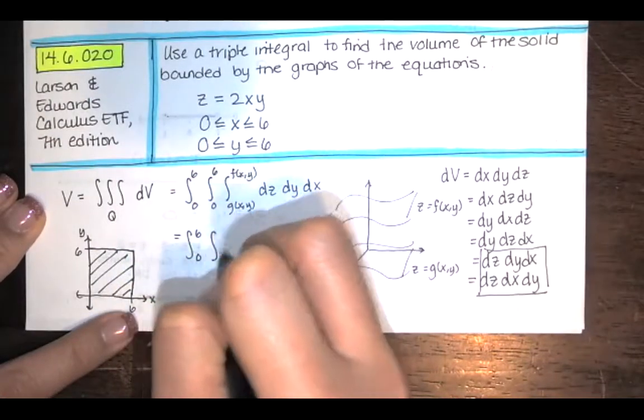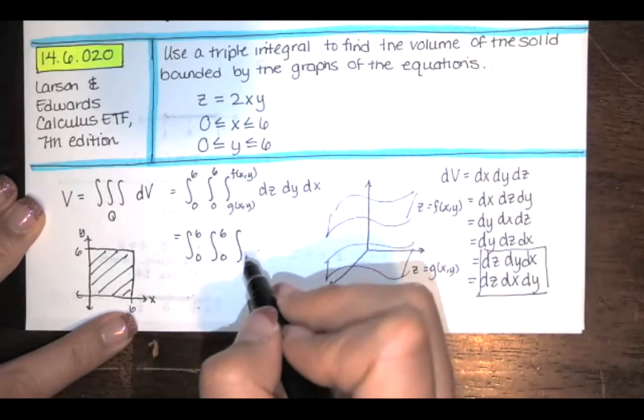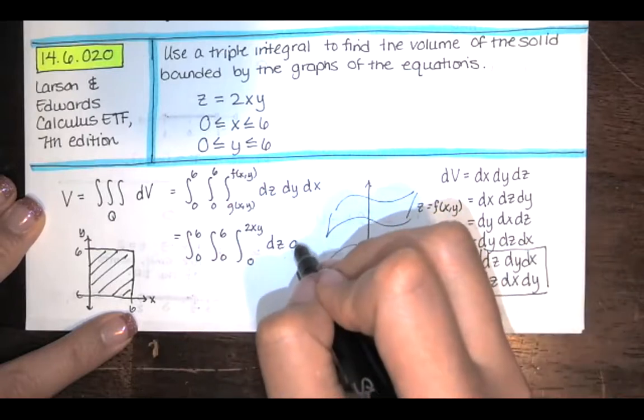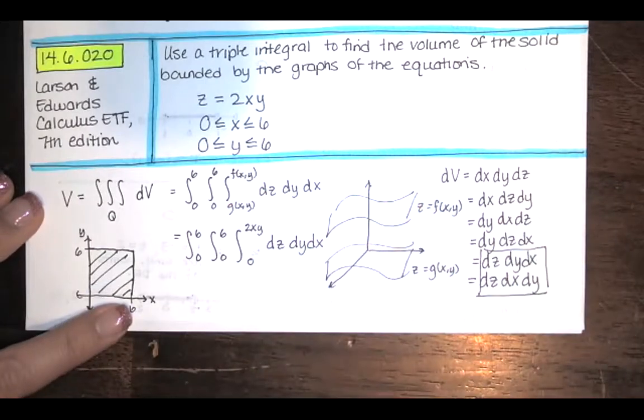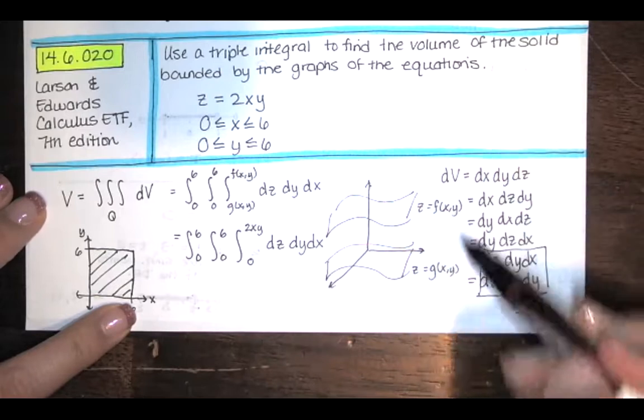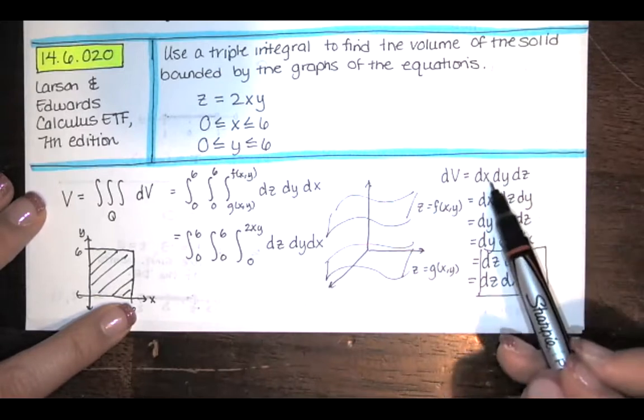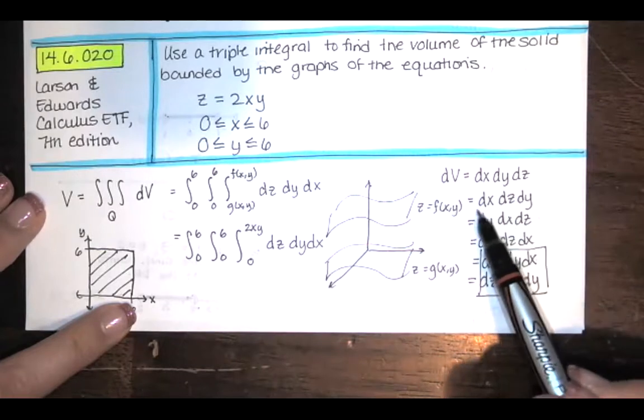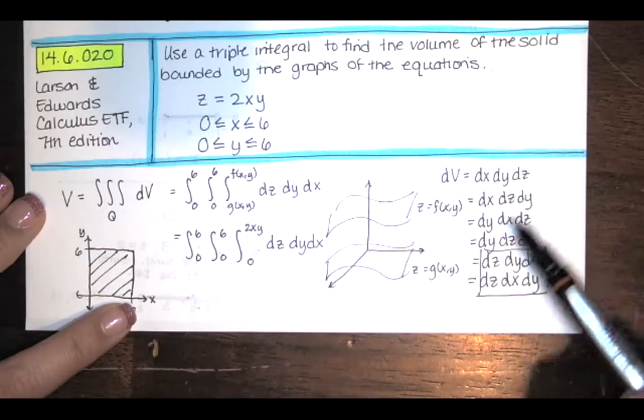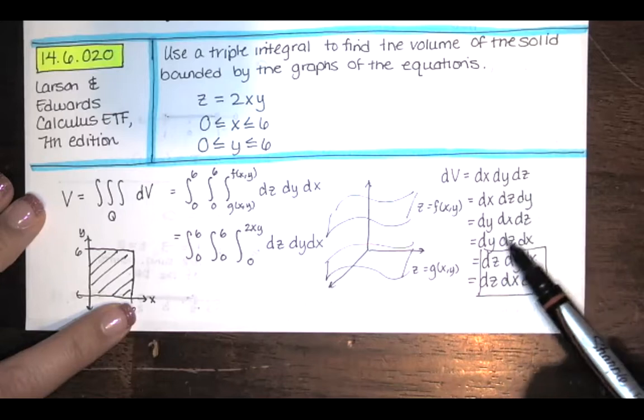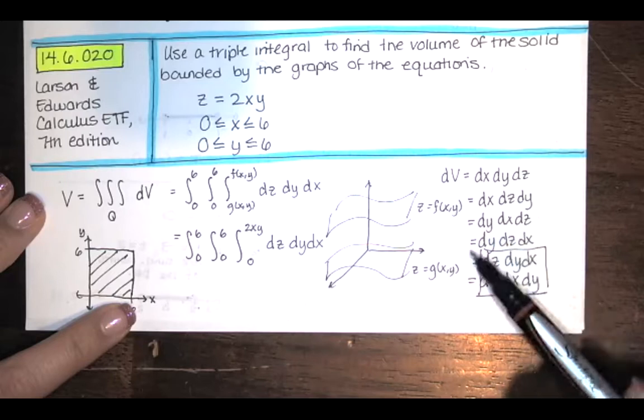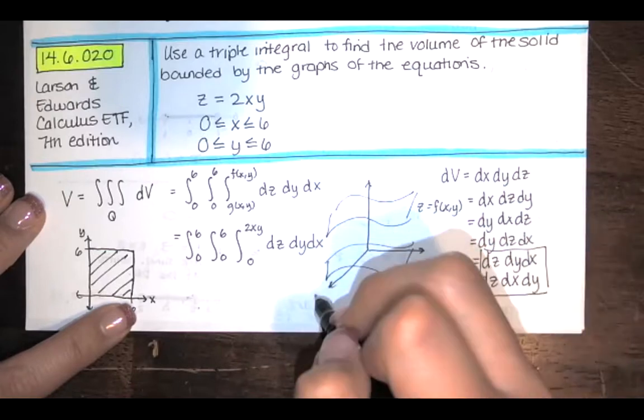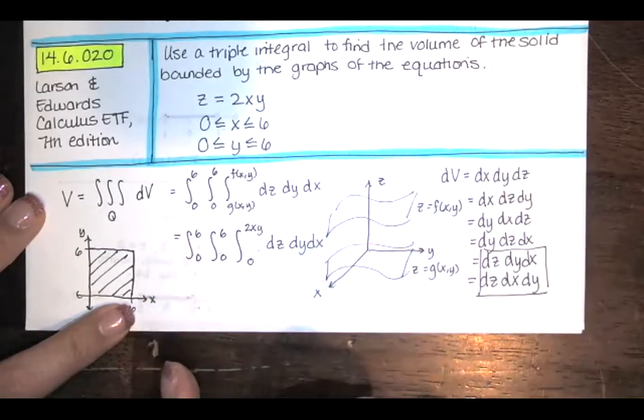So our bottom function is just the function that defines that xy plane z equals 0. And then we go up to the top function 2 times x times y. So we have the integral from 0 to 6 of the integral from 0 to 6 of the integral from the bottom function, which is z equals 0, to the top function, which is 2xy. And then we integrate with respect to z first, and then y and then x, or you could integrate with respect to x and then y. Either one would be fine. Now you can do the other orders of integration. You can always integrate from some function z or x equals some function of y and z to some other function of y and z. But we don't tend to think of it that way. We tend to think this way of z going from a bottom function to a top function. And so that helps us. And that makes it pretty easy to set up this integral.